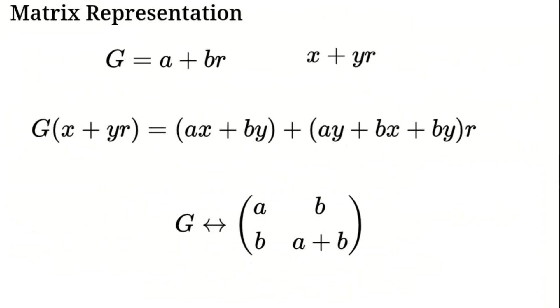This maps XY to AX plus BY, BX plus A plus B Y. The matrix is A in position 1,1, B in 1,2, B in 2,1, and A plus B in 2,2. That's our matrix for G.